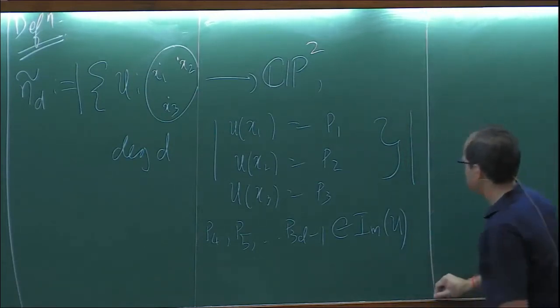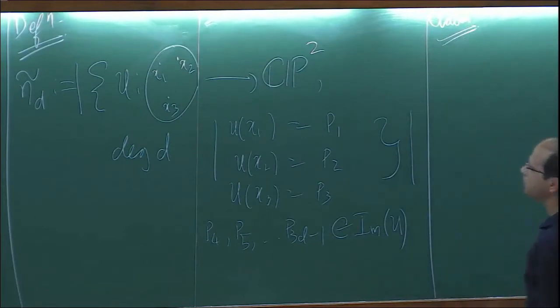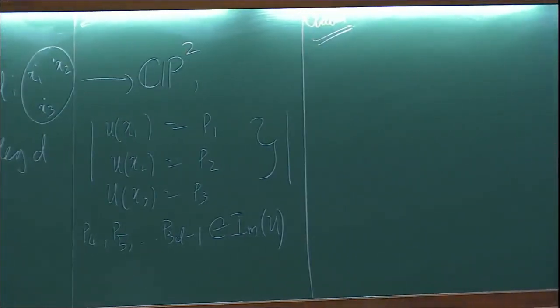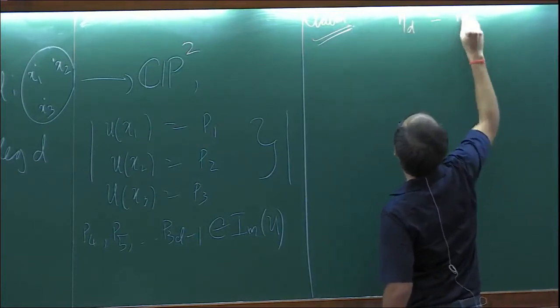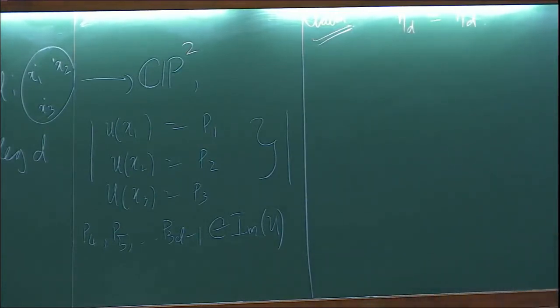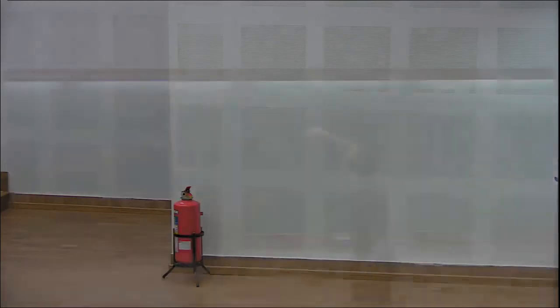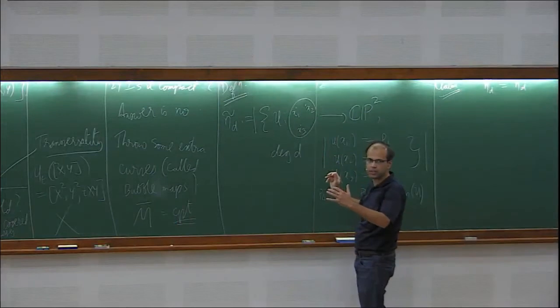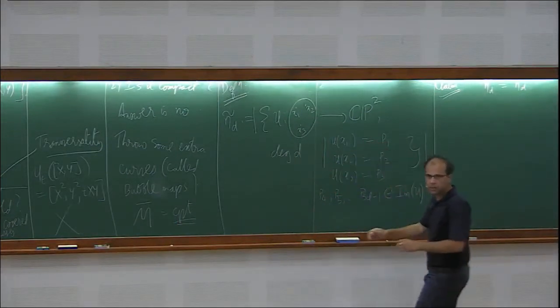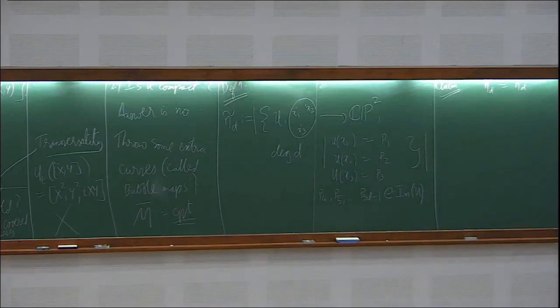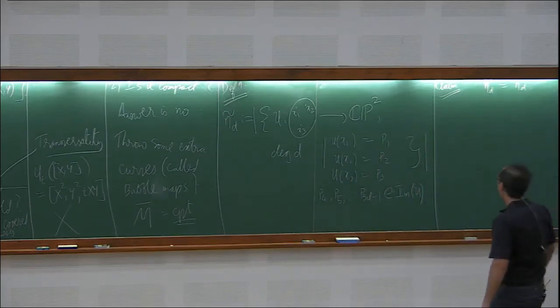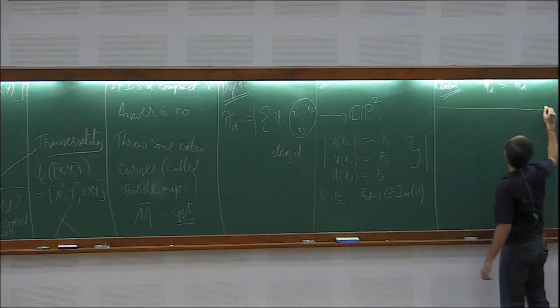This set is very different from the set defined before — there I look at maps modulo equivalence, here I look at maps with no equivalence but with three specific domain points going to three specific target points. I claim these two numbers are actually the same, because given any three points x1, x2, x3 and x1', x2', x3', there is a unique Möbius transformation taking x1 to x1', x2 to x2', and x3 to x3'. That's the basic reason.